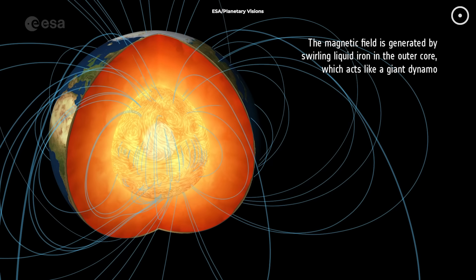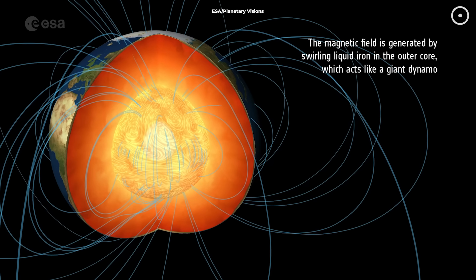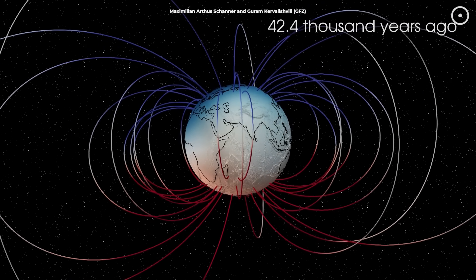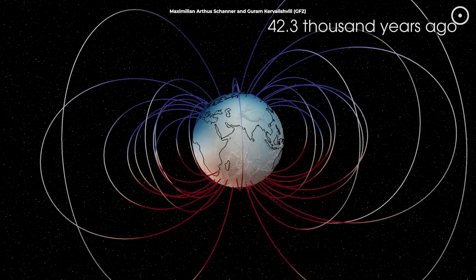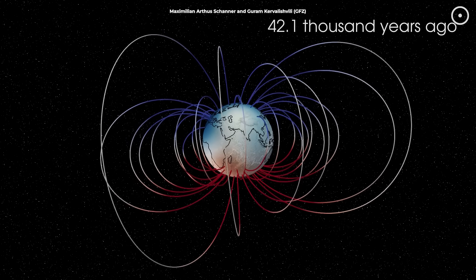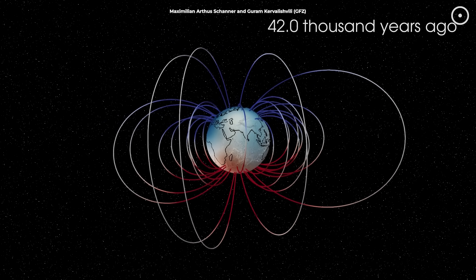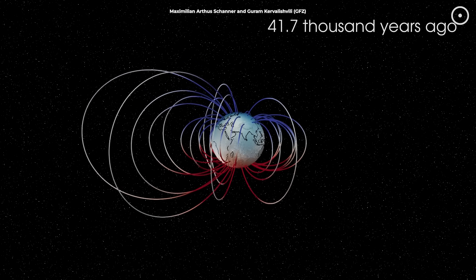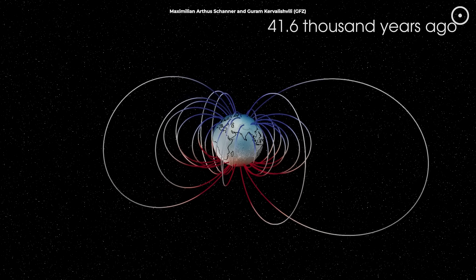Remember that ocean of liquid iron? Changes in how it flows can weaken some parts of the field and strengthen others. During a reversal, the field doesn't just switch off and on like a light switch. It's more like a dimmer that gradually fades down and then builds back up in the opposite direction. The process can take anywhere from a few hundred to a few thousand years to complete.